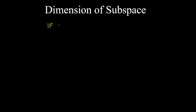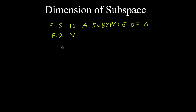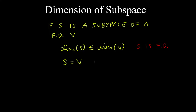If S is a subspace of a finite dimensional vector space V, then the dimension of the subspace must be less than or equal to the dimension of the vector space. Therefore S is also finite dimensional. And the subspace must be equal to the vector space if and only if their dimensions are equal.